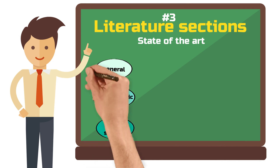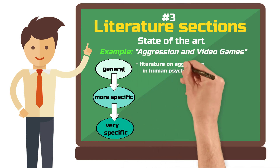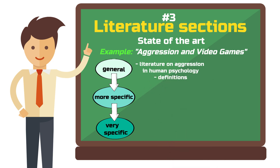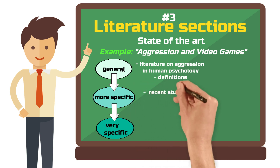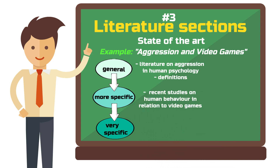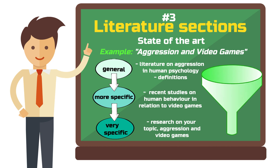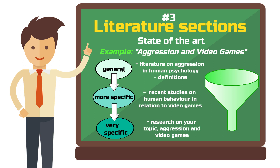You begin to explain your topic from general to specific. For example, if your topic is aggression and video games, you start with the literature on aggression in human psychology and define what it is — that is quite general. Then you present recent studies on researching human behavior in relation to video games, which is more specific. And finally, what has been researched specifically on aggression and video games, which is very specific. You can imagine this principle as a funnel: you start with a general overview and move closer to your specific problem.